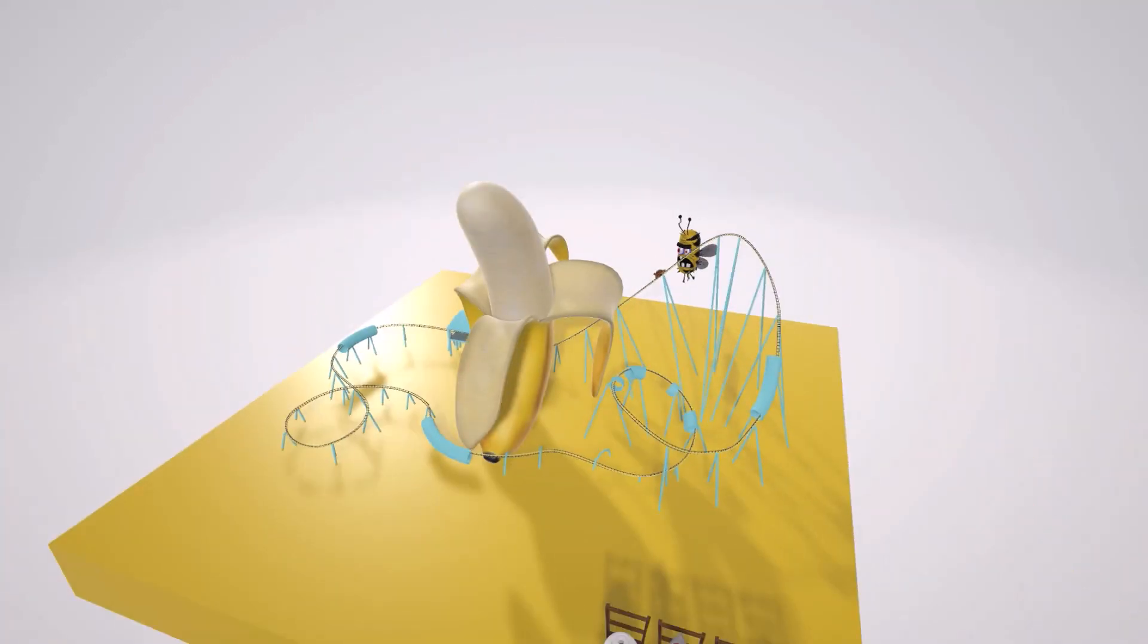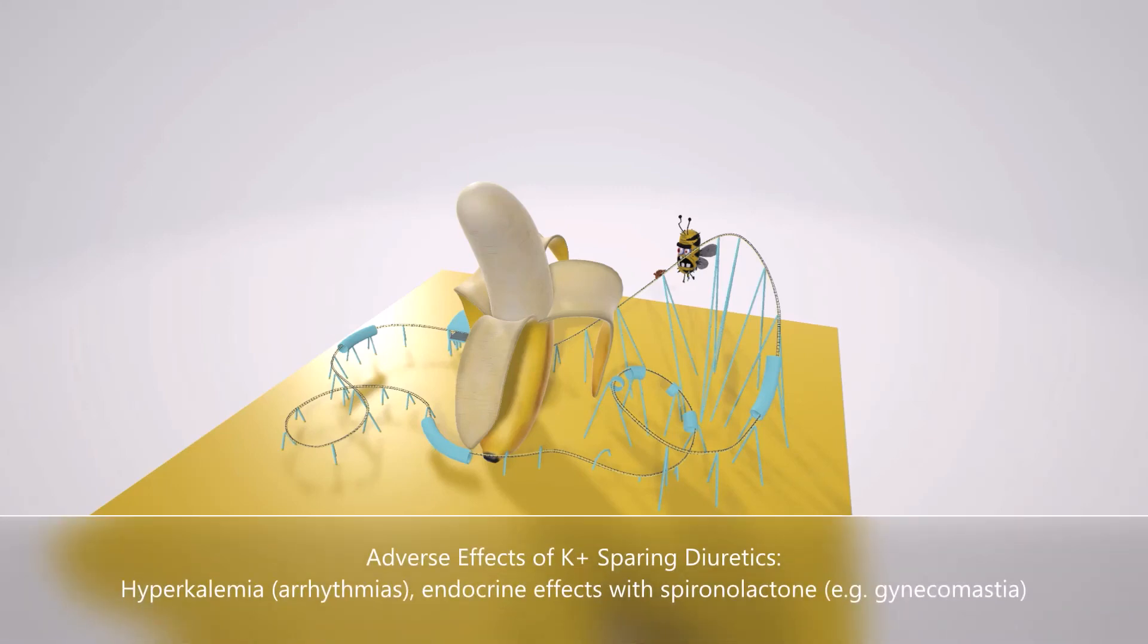With all this in mind, it's understandable that the adverse effects of potassium sparing diuretics will include hyperkalemia due to the increase in potassium, which can lead to arrhythmias. Spironolactone also has some endocrine effects, such as gynecomastia and antiandrogen effects. But you can watch our video on spironolactone specifically for more on that.